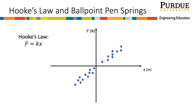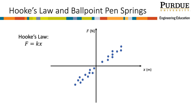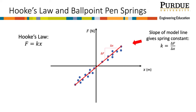Hooke's law indicates that the spring constant k is the slope of the line where x, the displacement of the spring, is the independent variable, and f, the directional force on the spring, is the dependent variable. Here we have the data plotted from the spring, and we can see there is a linear relationship. Using linear regression, we can model the data with a line. Once a line is determined, we use the slope of the line to identify our spring constant k.